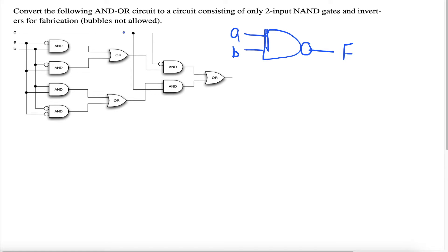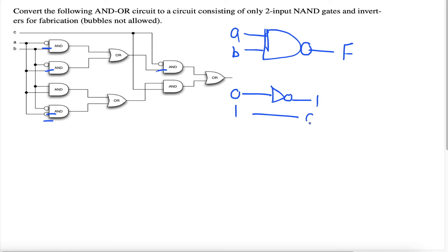Now the next thing: it says bubbles are not allowed. Basically, all the pre-existing bubbles in this circuit cannot be there. Bubbles are what we call inverters — they represent inverters. An inverter just makes the number opposite: if there's a zero it results in a one, or if there's a one it results in a zero. It just takes the opposite value of whatever number is inputted.